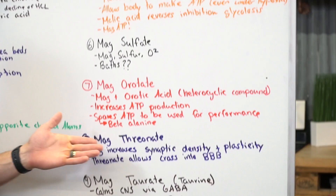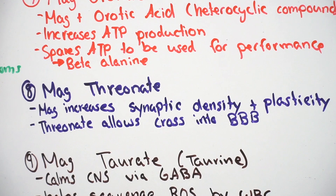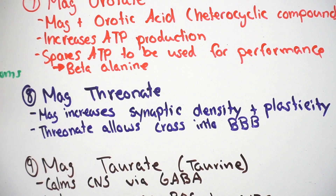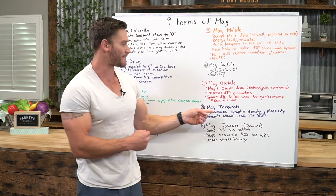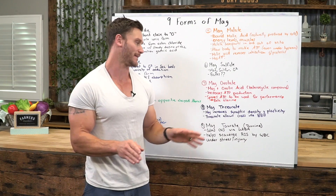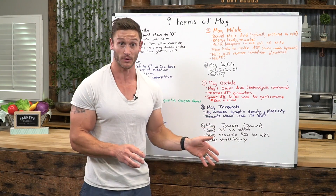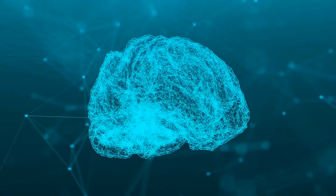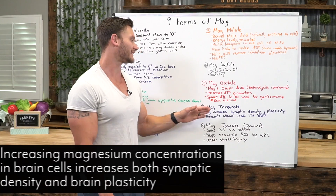Then we have mag threonate — this is all about the brain. Between mag glycinate and mag threonate, those are my two favorites. I take mag threonate before I film simply because it boosts my mental function, and it's proven. Basically, the threonate makes it so that magnesium can get into the brain — that's all there is to it.